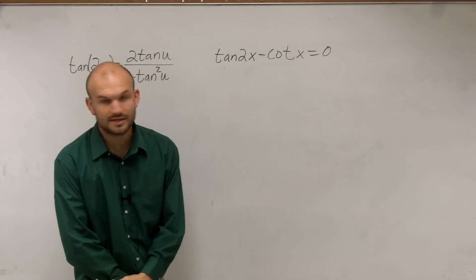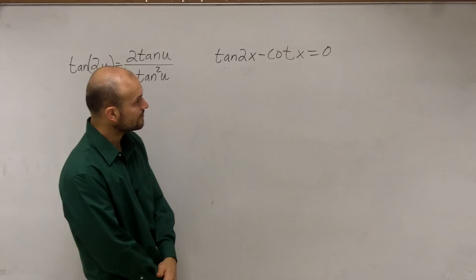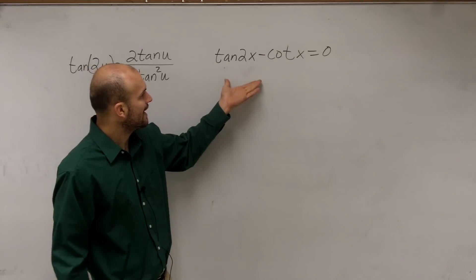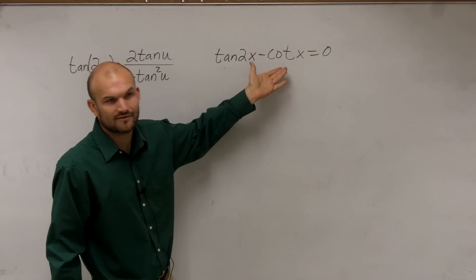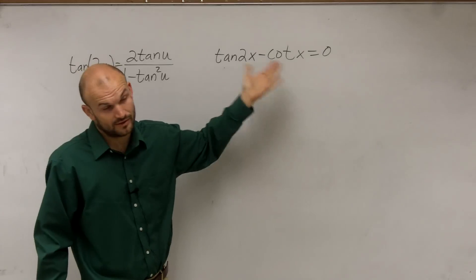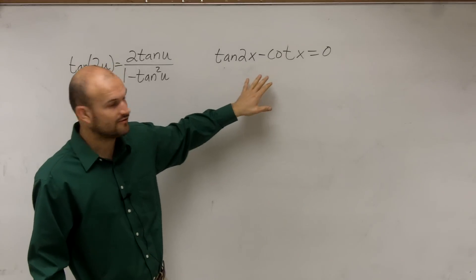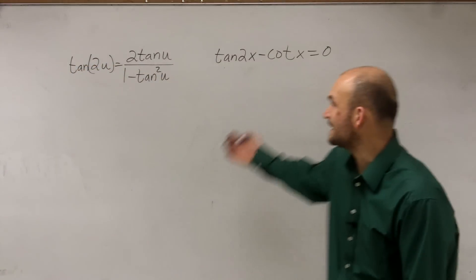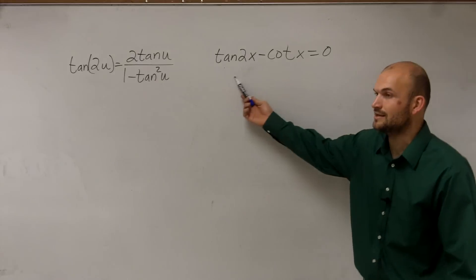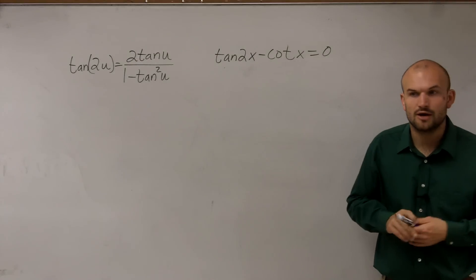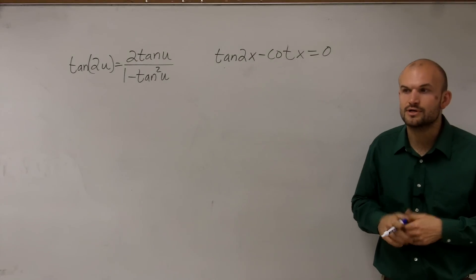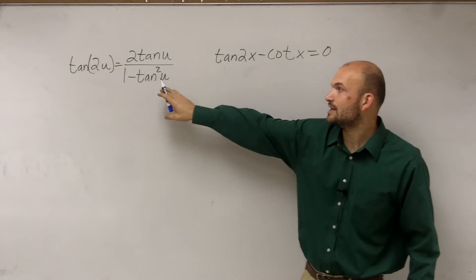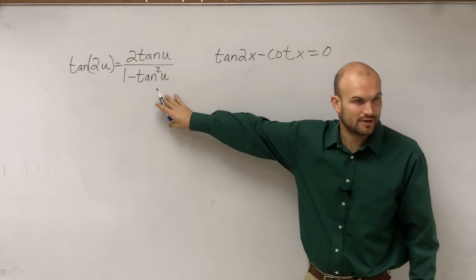We have a problem here because I can't really do a factoring — I can't factor something out easily. And I can't just isolate it; I have two different functions with my variable. So what I'm going to apply is the double angle formula, since I notice I have a double angle.